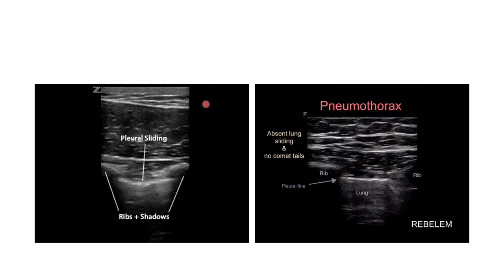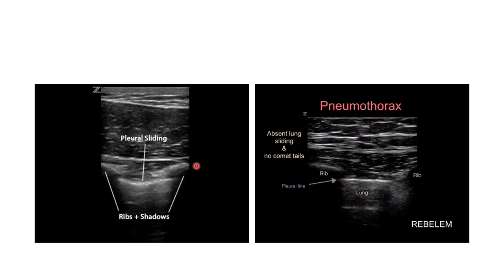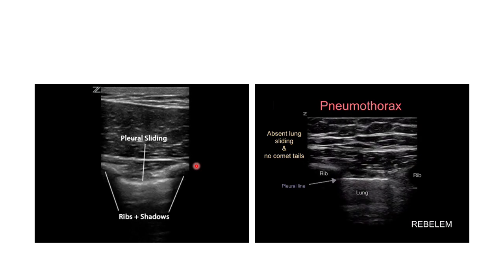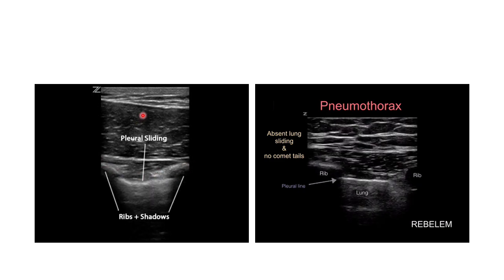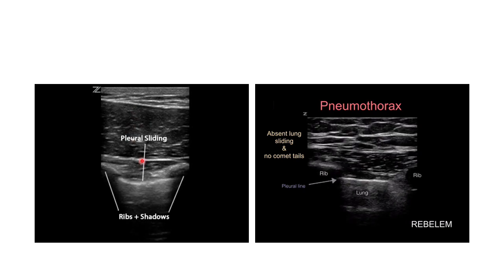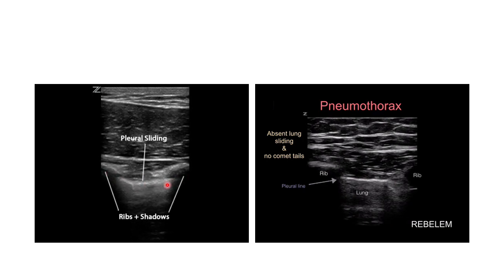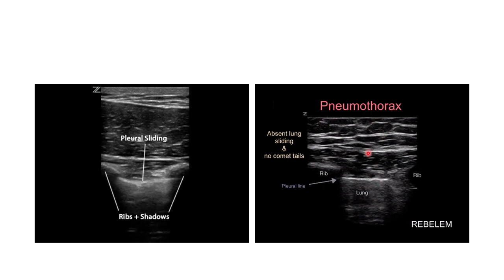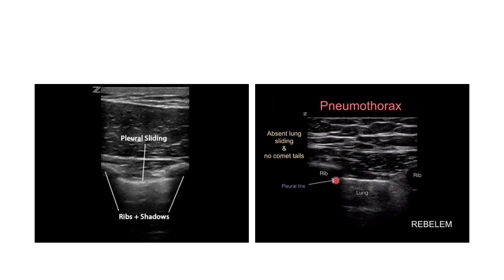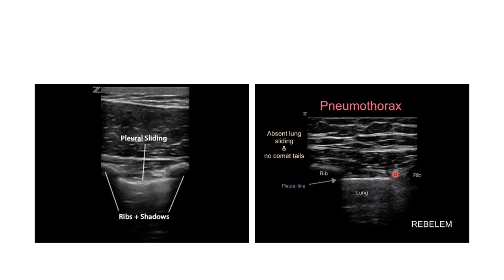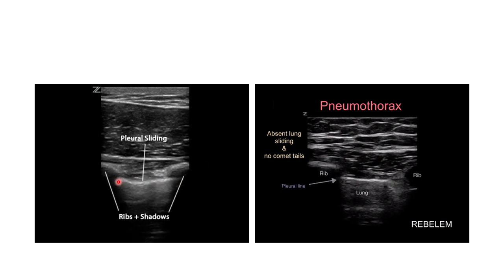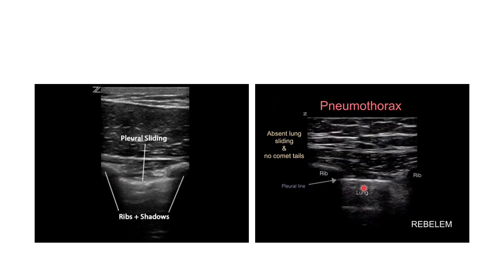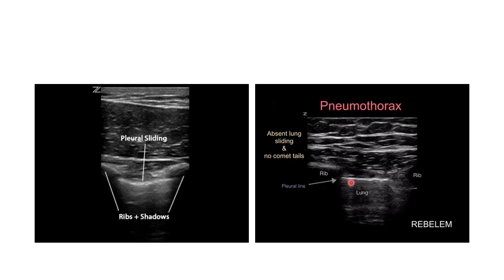Scanning in the mid-clavicular line between two ribs, you can see skin, subcutaneous tissue, intercostal muscles, rib shadows, and between those ribs, pleural sliding. In the second view demonstrating pneumothorax, you can see skin, subcutaneous tissue, and intercostal muscles, but the pleural line is not sliding. The comet tail appearance is absent — this amounts to a pneumothorax.